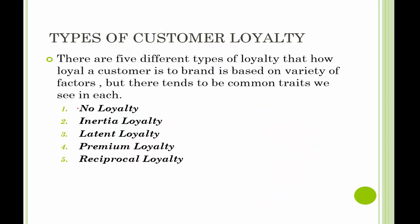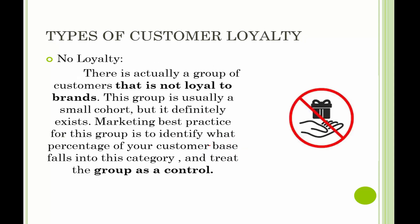At a broad level, there are five different types of loyalty: no loyalty, inertia loyalty, latent loyalty, premium loyalty, and reciprocal loyalty. The first is no loyalty — there is a set of customers who will not repurchase. They buy once and do not come back. This is normally a very small cohort, but it's important to identify them so you do not spend money on them, as it's very unlikely you will make any return on that investment.